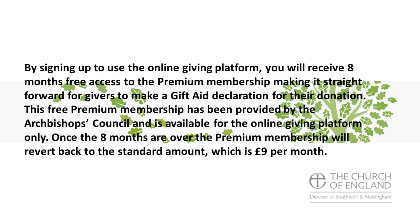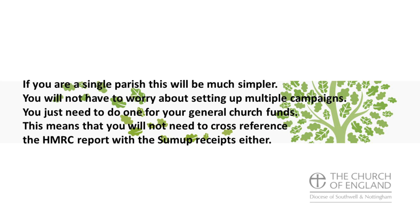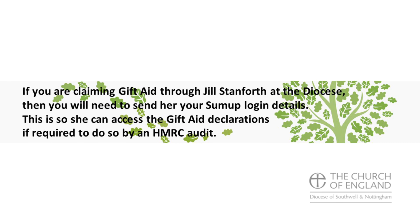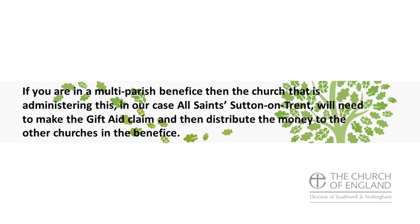A few points to note as we finish. By signing up to use the online giving platform, you will receive eight months free access to the Give A Little premium membership, making it straightforward for givers to make a gift aid declaration for their donation. This free premium membership has been provided by the Archbishop's Council and is available for the online giving platform only. Once the eight months are over, the premium membership will revert back to the standard amount of £9 a month. If you are a single parish, this will be much simpler — you will not have to worry about setting up multiple campaigns or cross-referencing the HMRC report with the SumUp receipts. If you are claiming gift aid through the diocese, you will need to send your SumUp login details so they can access the gift aid declarations if required by an HMRC audit. If you are in a multi-parish benefice, the church administering this will need to make the gift aid claim and distribute the money to the other churches in the benefice.